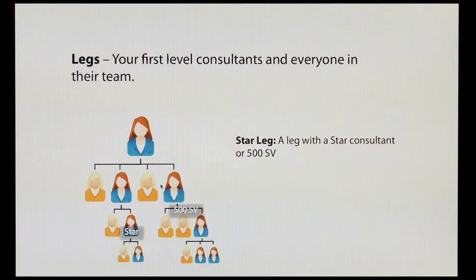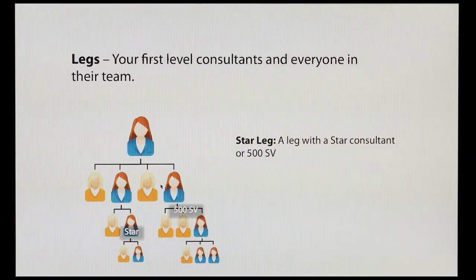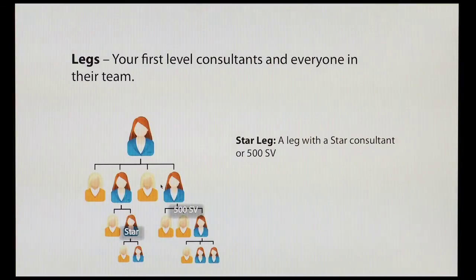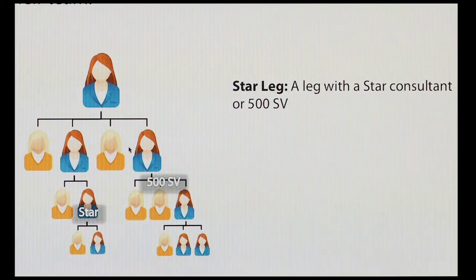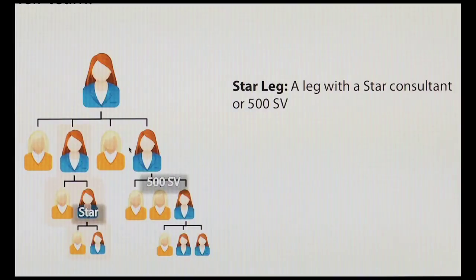Next, we have something called legs. A leg is simply your first consultant and everyone in their team. So we have leg qualifications — we have something we call a star leg. It was called active leg before; we're calling it star leg going forward. A star leg is someone with a star consultant in it or 500 sales volume, so this would be a star leg here because it has a star ranked consultant.